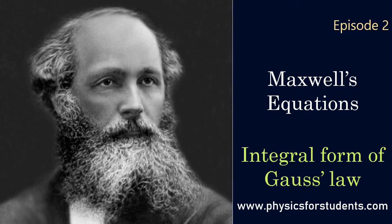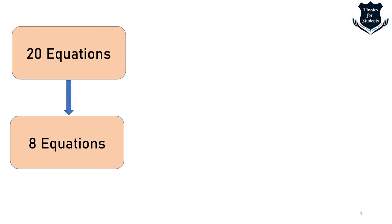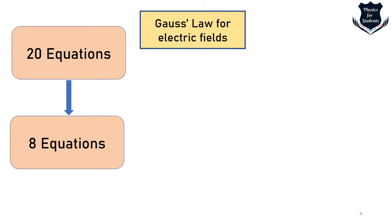Before we explain Maxwell's equations, if you've seen my earlier video on the development of Maxwell's equations, you'll know that originally they were written in 20 different forms. Along with Oliver Heaviside, these were reduced to eight equations, which we see in four different forms.